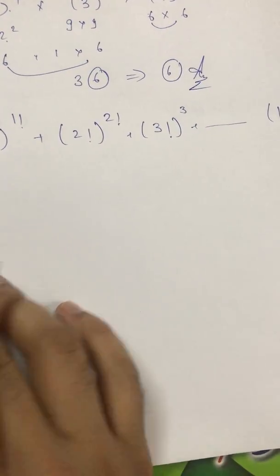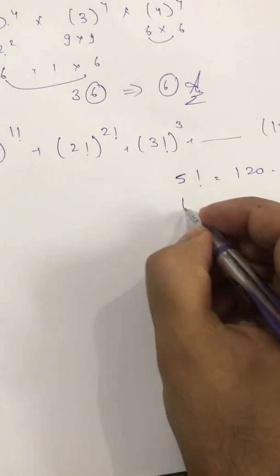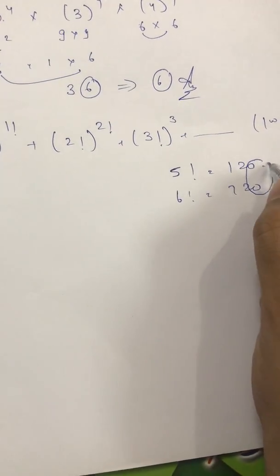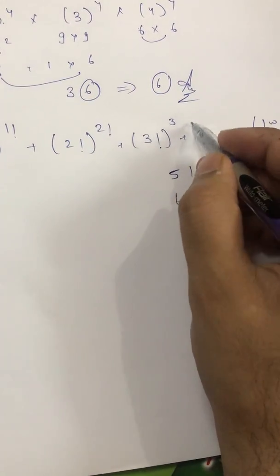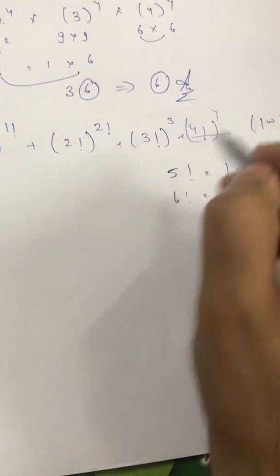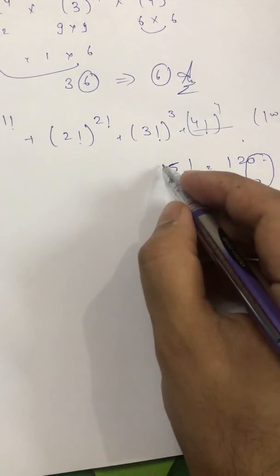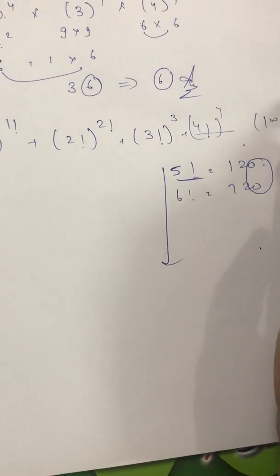So we all know that factorial 5 is 120, that mean factorial 6 is 720, so this 0 will be there, so 0 will be there. So is there a need for me to go beyond your 4 factorial? No. Why no? Because after 5, after 4, 5th onwards, you are getting 0 in your unit place, so I am not going to check this.